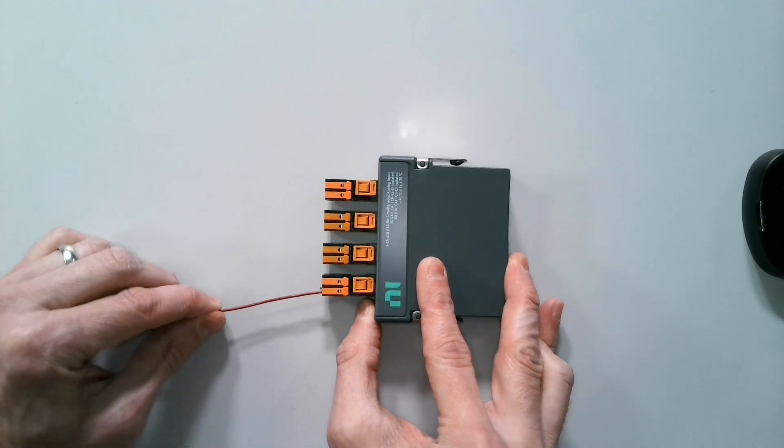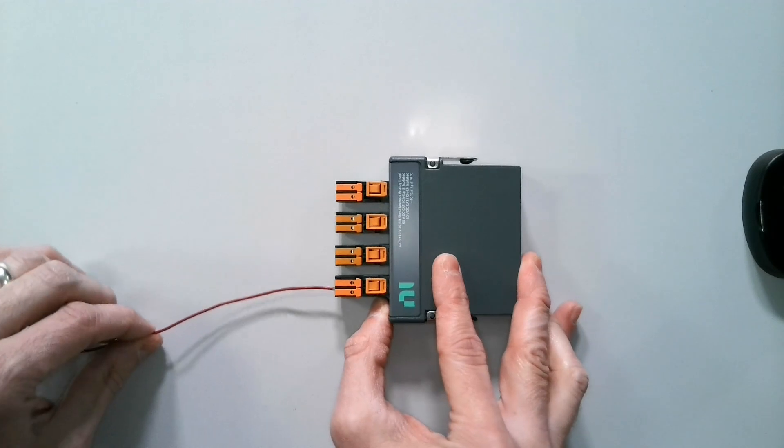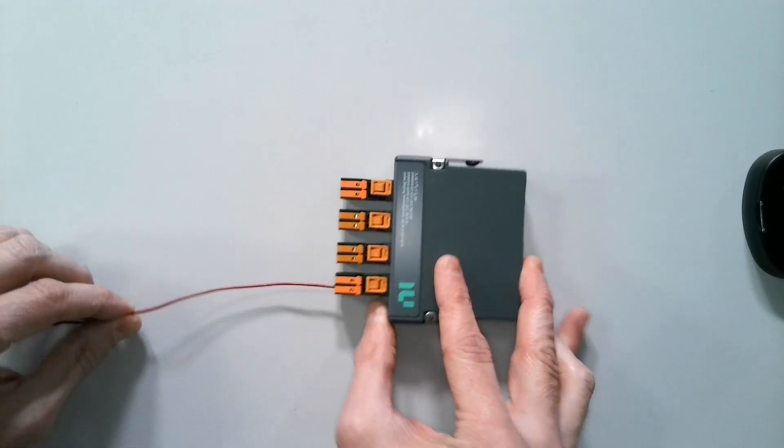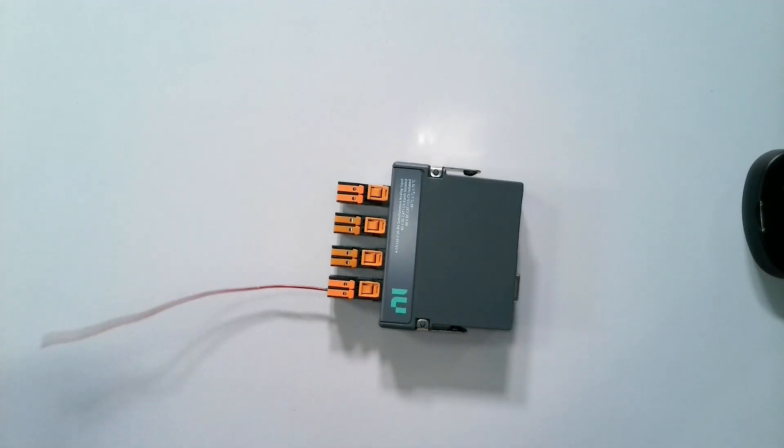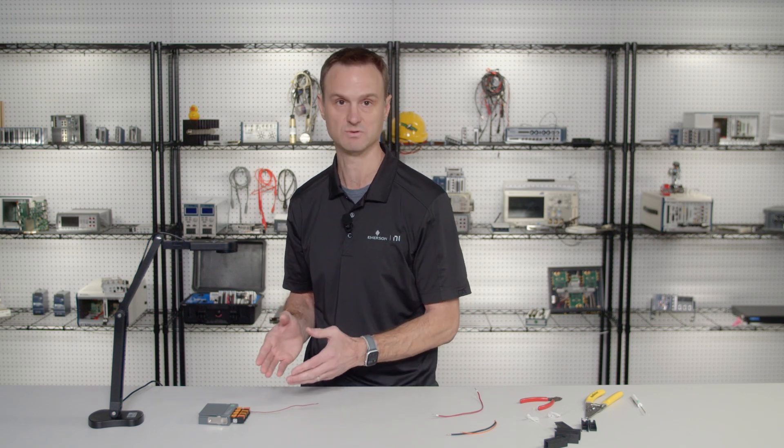I don't know if you heard that but there's a little click and then there's also a little green tab that sticks out right there. That's all I did and you see me tugging on it. This now meets the CRIO shock and vibe spec of 50 Gs of shock and 5 Gs of vibration just with that little click.